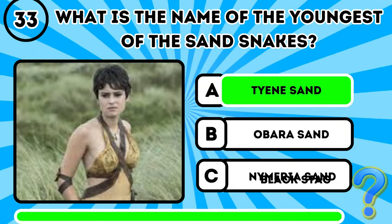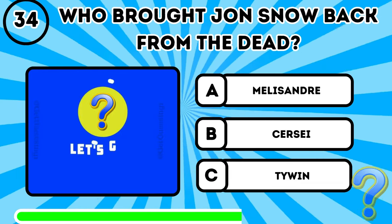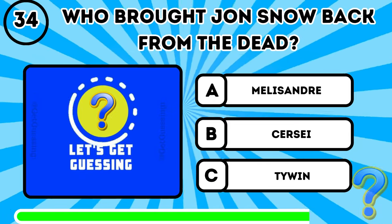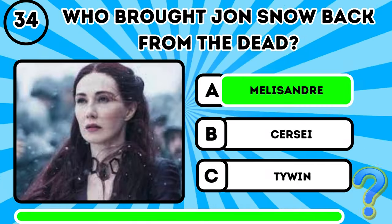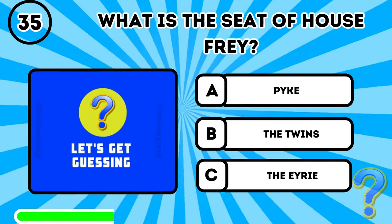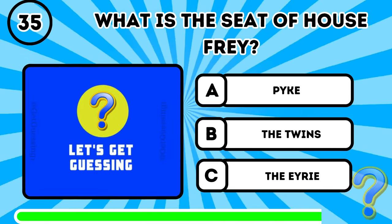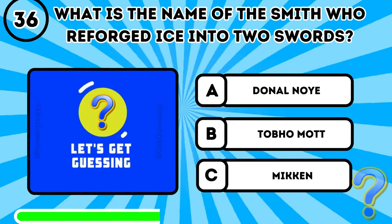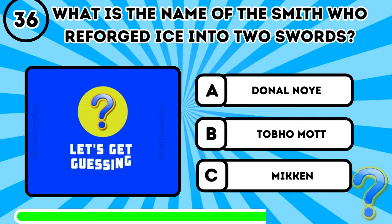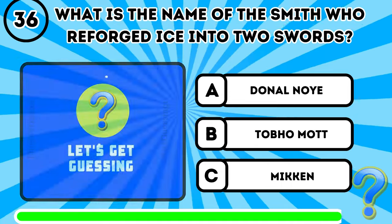Question 33 answer: It's A, Tyene Sand. Question 34: Who brought Jon Snow back from the dead? It's A, Melisandre. Question 35: What is the seat of House Frey? It's B, the Twins.